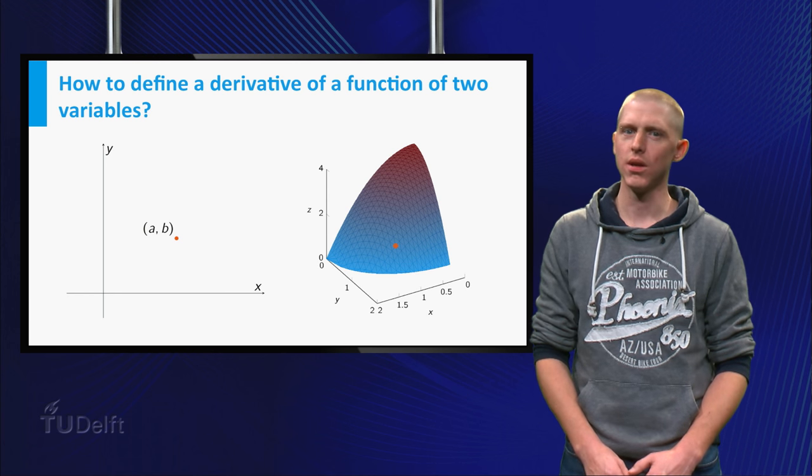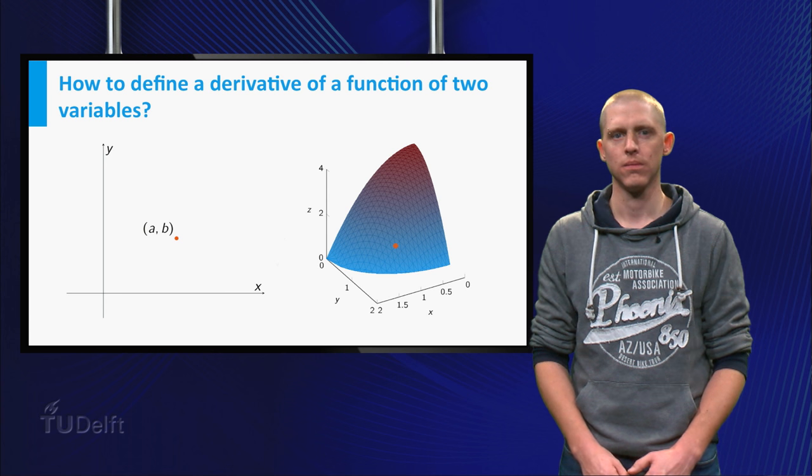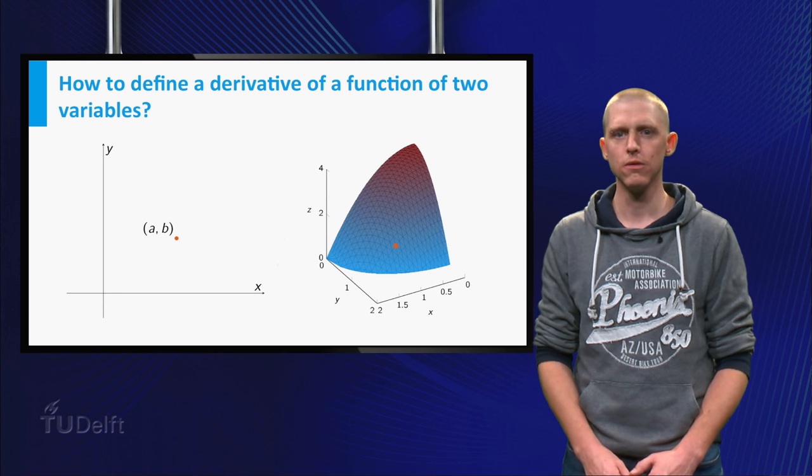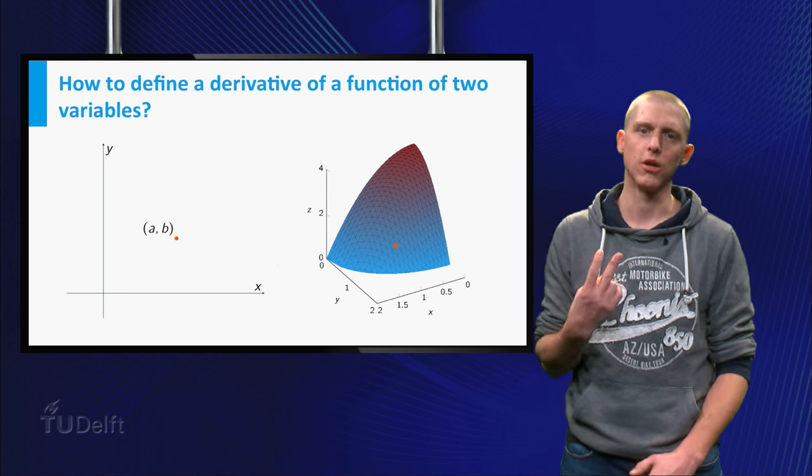Both variables x and y can change independently. So how can we define a derivative for a function of two variables?